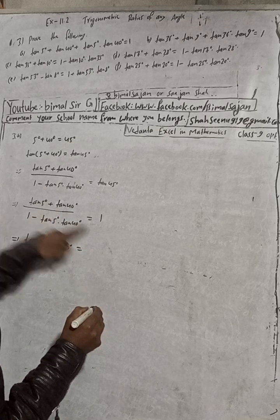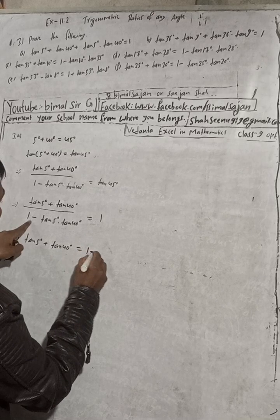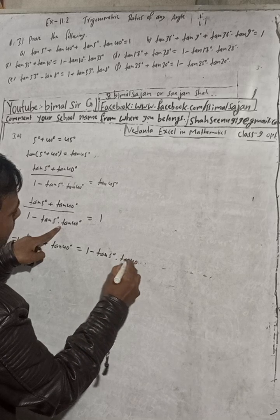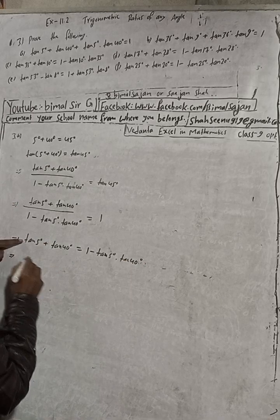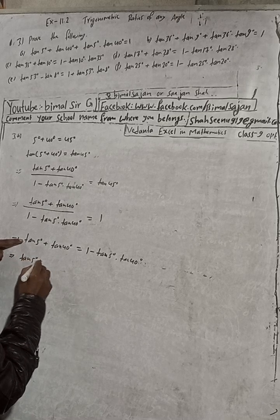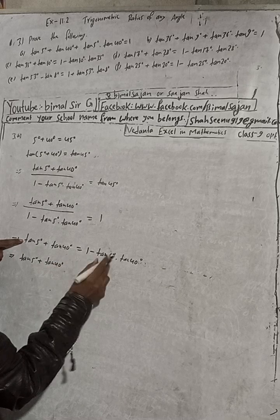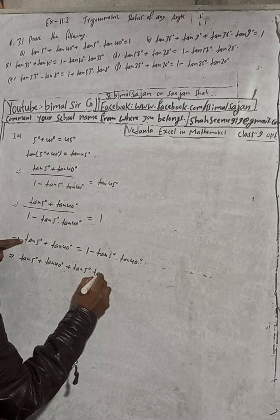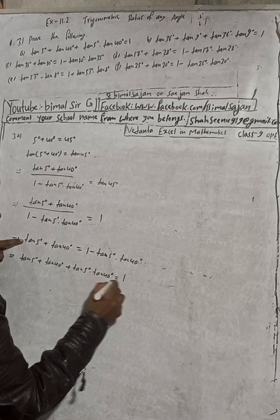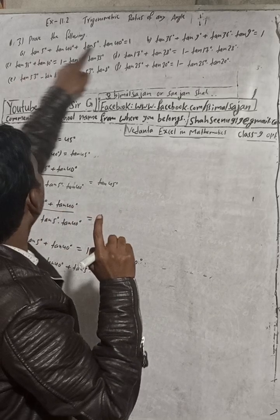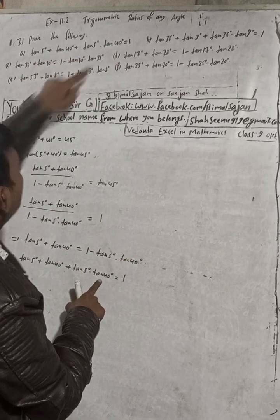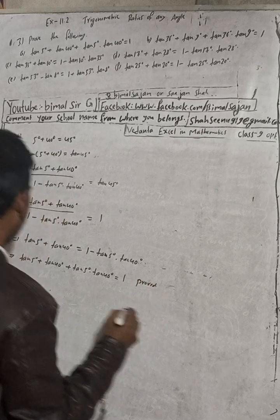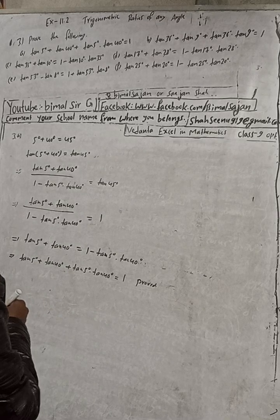This equals 1 × (1 − tan5°·tan40°). So rearranging: tan5° + tan40° + tan5°·tan40° = 1. This is what we had to prove — proved.